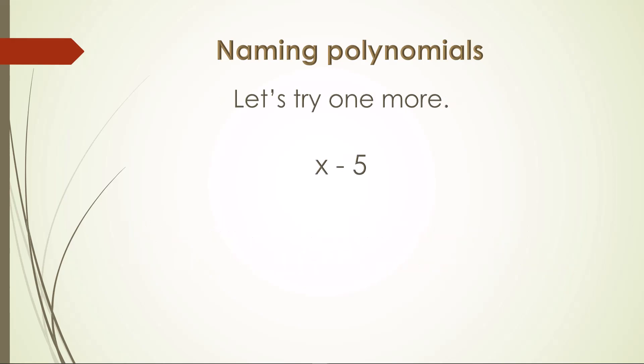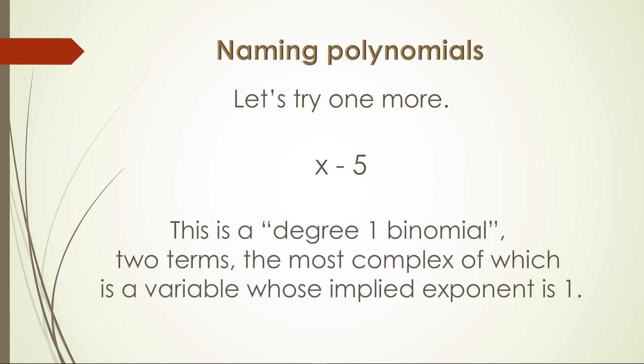Let's try one more. x minus 5. This is a degree 1 binomial. Two terms, the most complex of which is a variable whose implied exponent is 1.